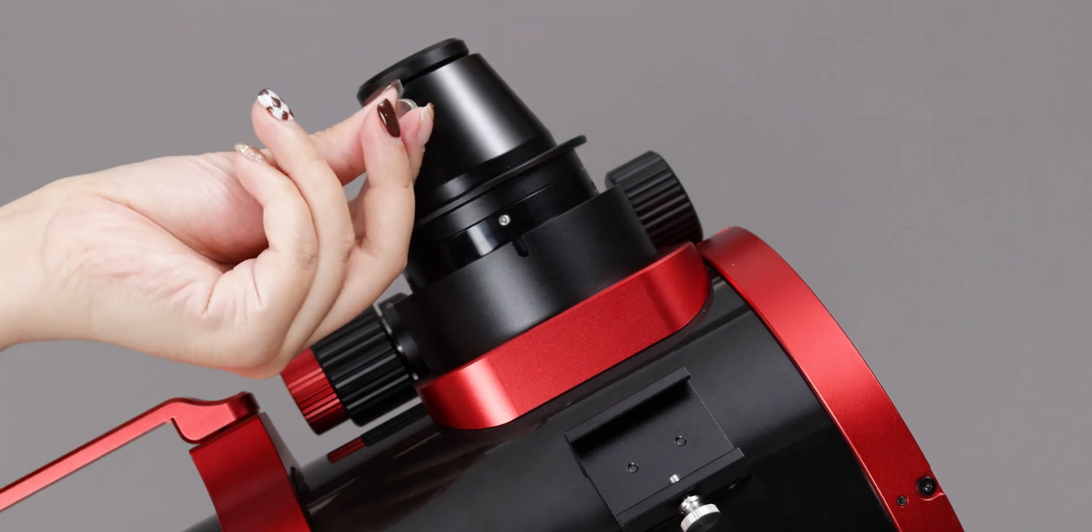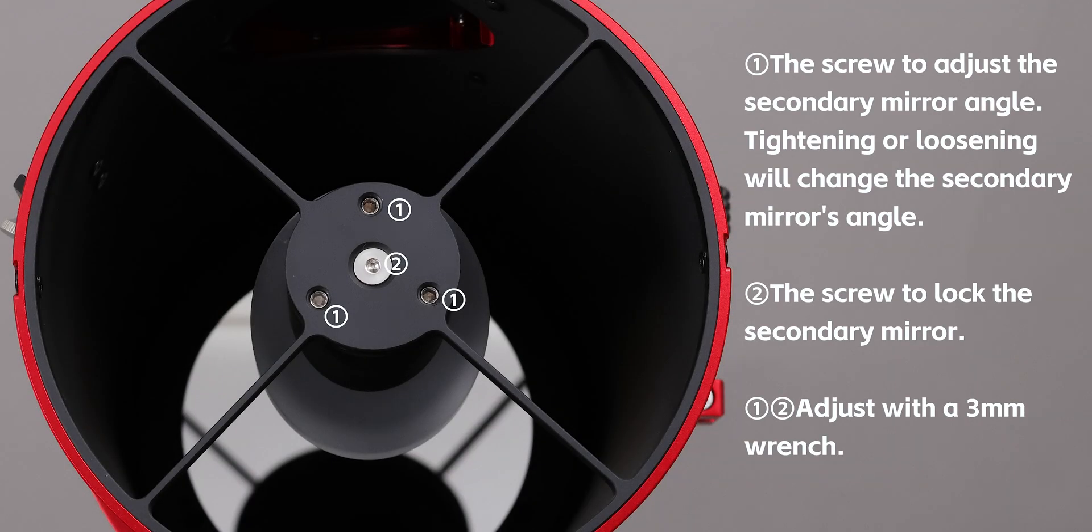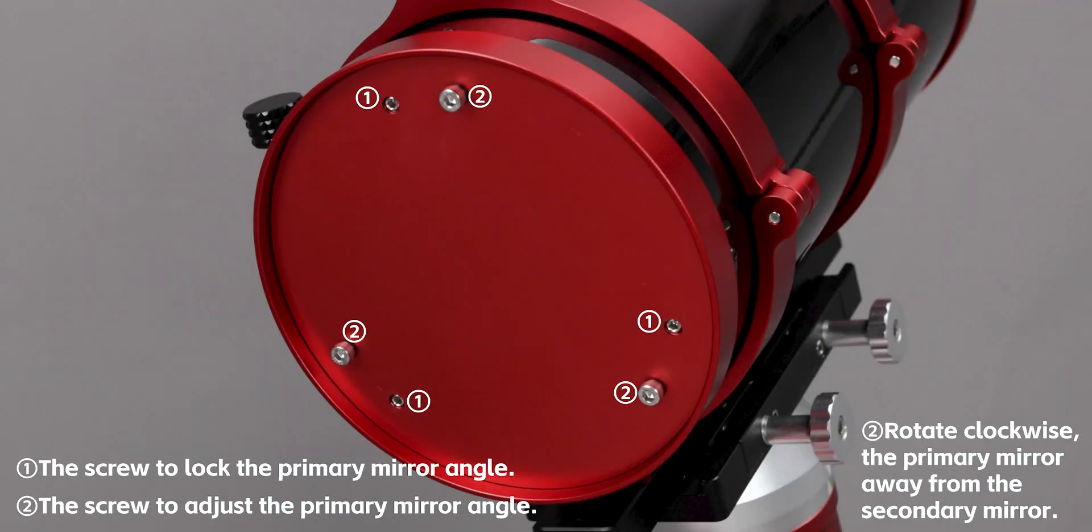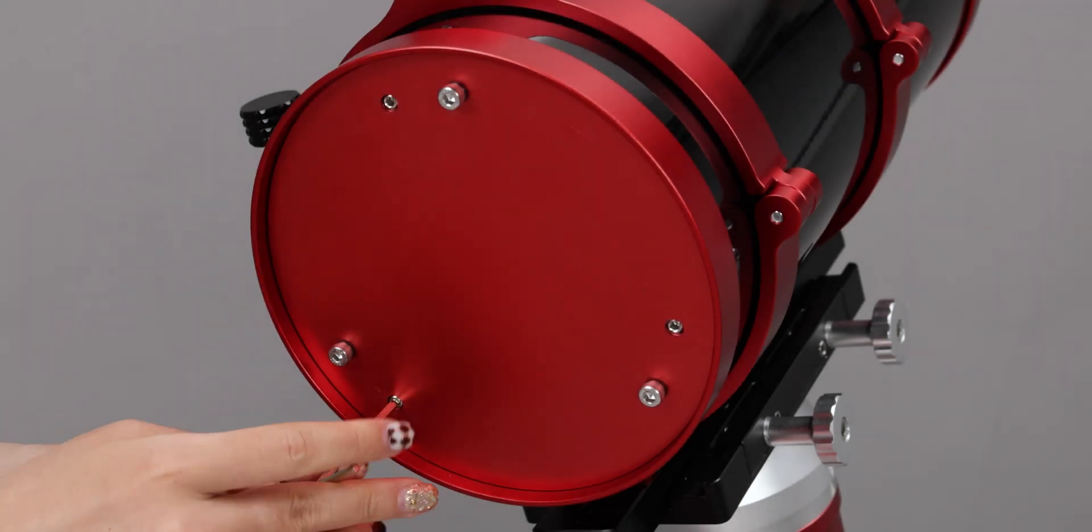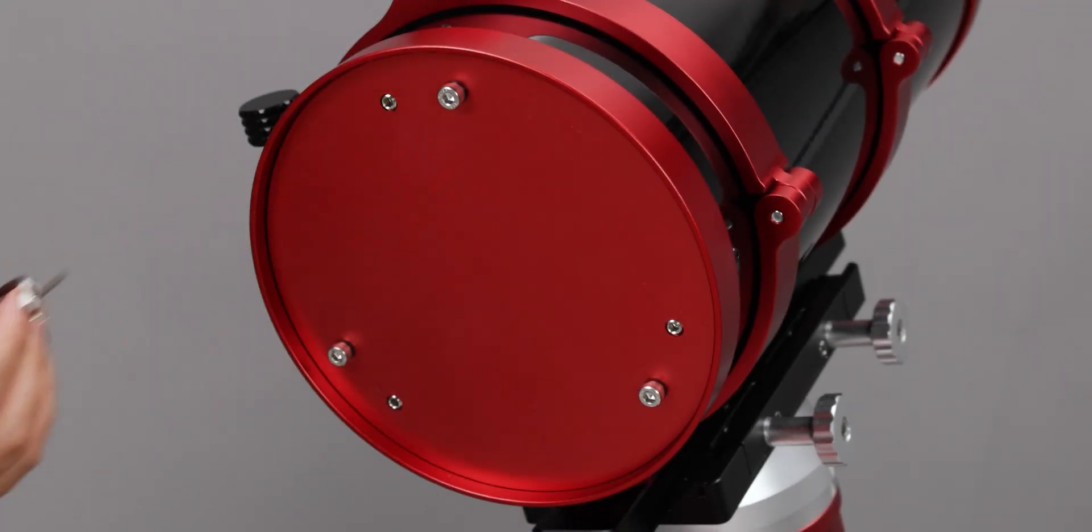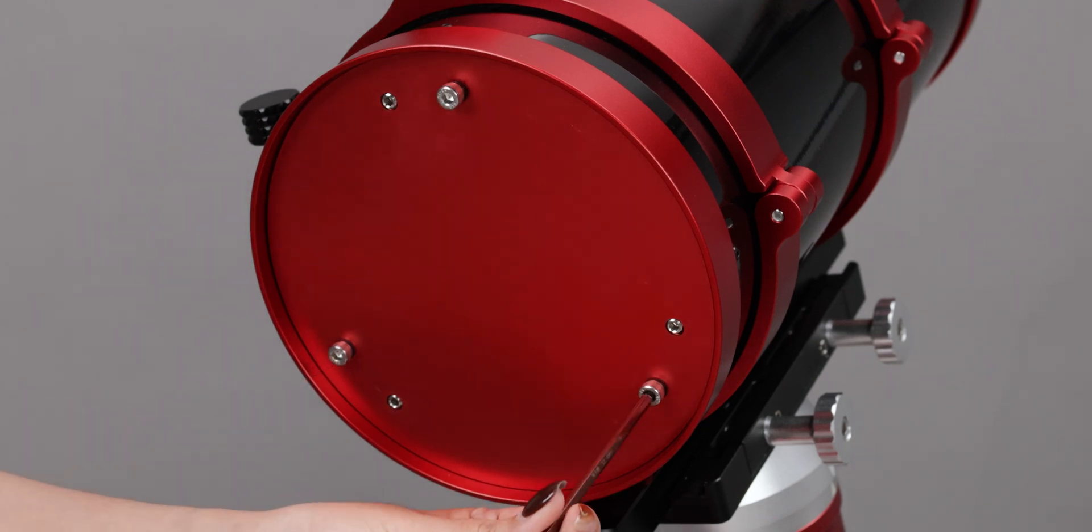Now, let's start collimating. Use a 3 mm wrench to adjust the primary mirror locking screws so that they are flush with the bottom surface. Use a 4 mm wrench to clockwise tighten the primary mirror adjustment screw.